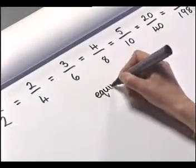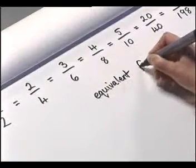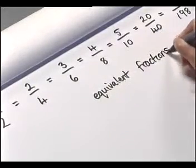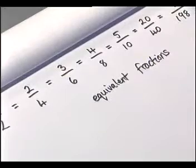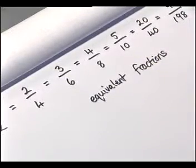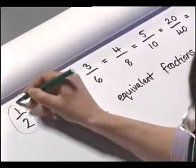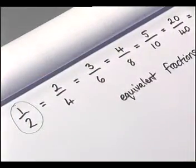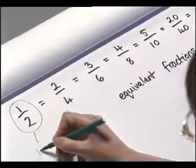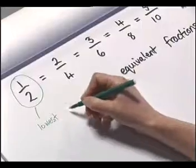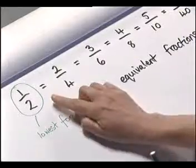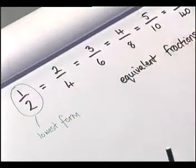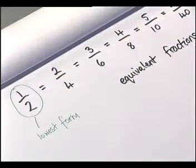And what we have here is actually equivalent fractions. Each one of these fractions is equivalent — they're the same as each other. Now this form of the fraction, our half, is our fraction in its lowest form. And often we need to write fractions in their lowest form — it's much easier to visualise them in this lowest form than in any other form.